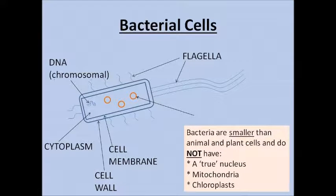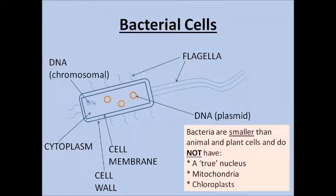Bacteria do not have DNA contained within a nucleus but they do still have DNA. They have it as free floating chromosomal DNA and they also have extra structures called plasmids which are little rings of DNA which carry extra information.